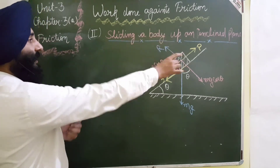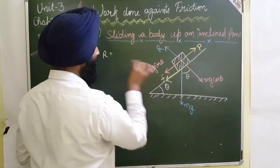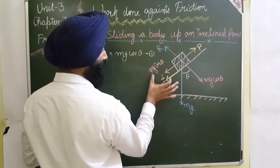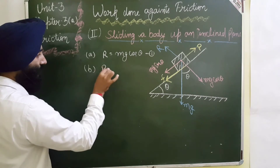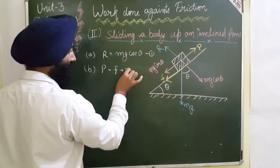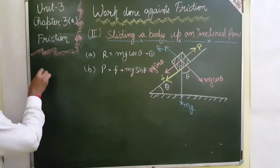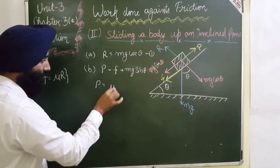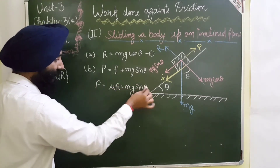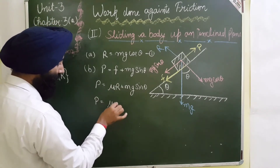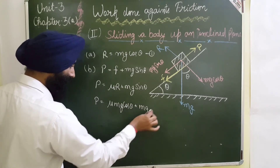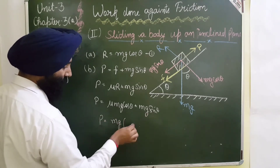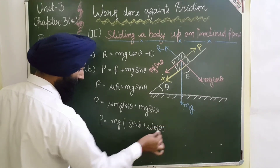Now we do the calculation. Comparing reaction forces: R equals Mg cos θ — this is equation 1. For the applied force: P equals F plus Mg sin θ (equation 2). Frictional force F equals μR, so P equals μR plus Mg sin θ. Substituting R equals Mg cos θ: P equals μMg cos θ plus Mg sin θ, which simplifies to P equals Mg(sin θ + μ cos θ).